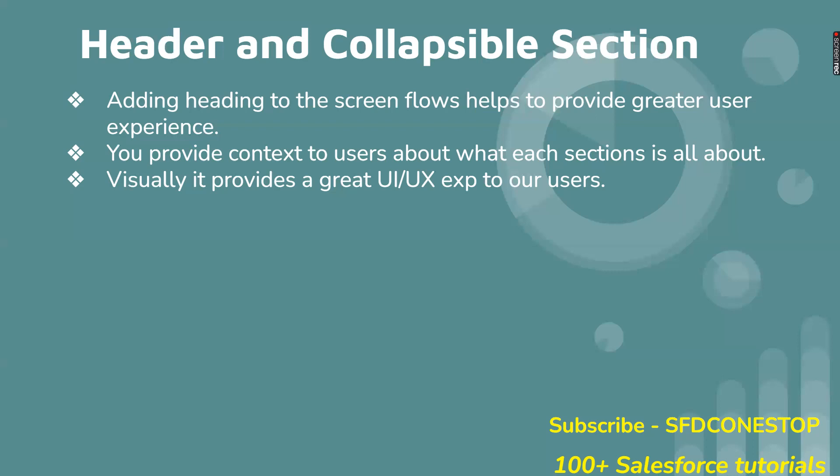So that is what we are going to discuss in today's session — how you can add a heading and make those sections collapsible when using multiple section components in your screen flow. If you are watching our videos for the first time, I would request you to please visit our channel SFDC One Stop, wherein we have 100-plus Salesforce tutorials. The topic we are going to discuss about lightning screen flow is something we have already covered in our previous video session, so you can go through that specific topic.